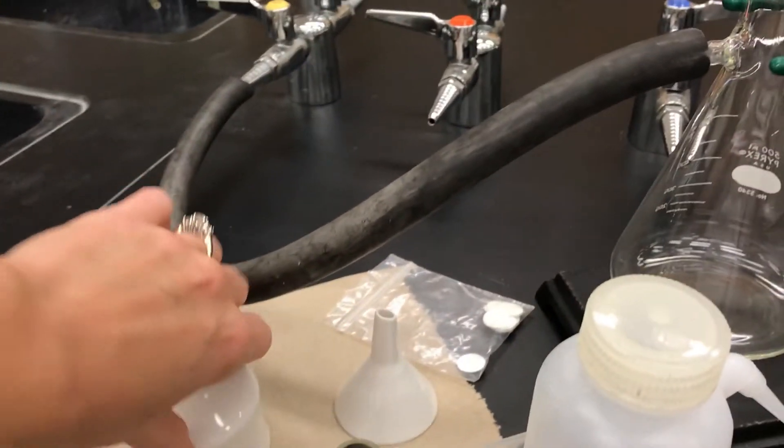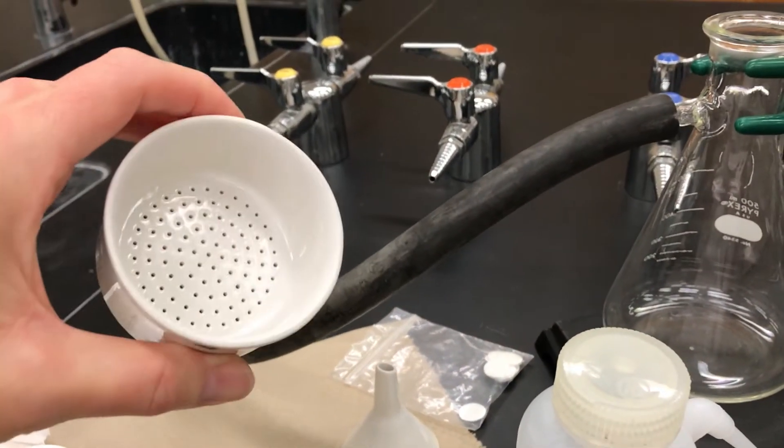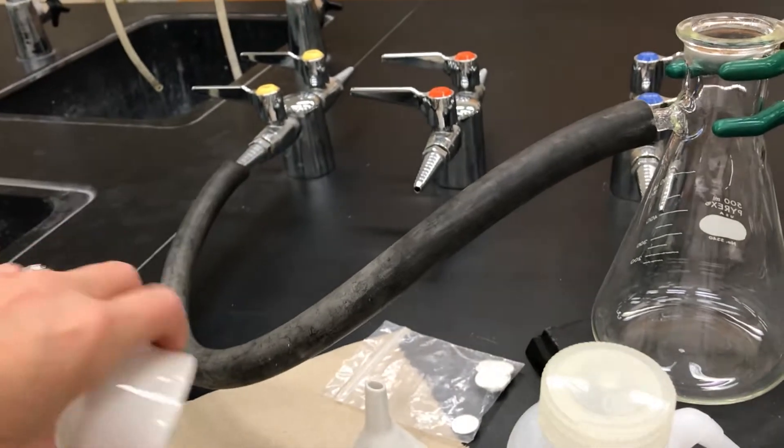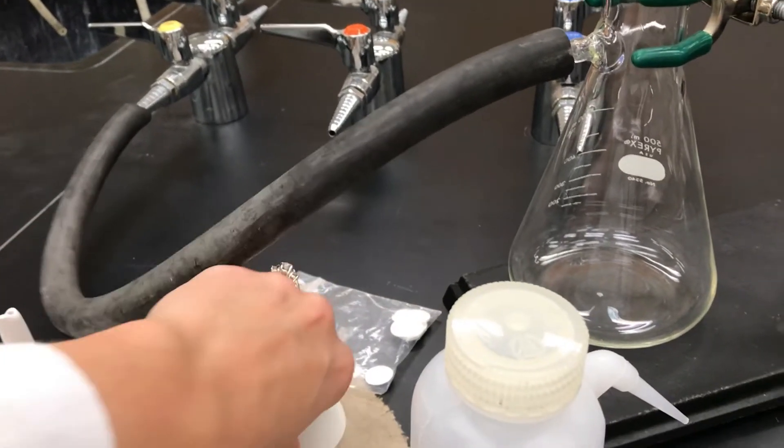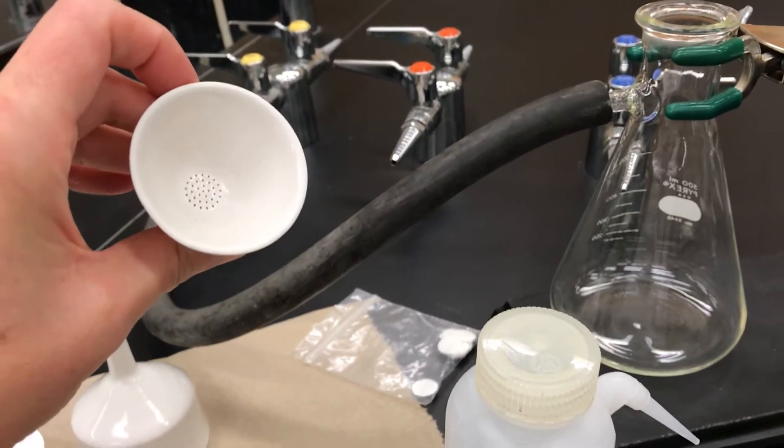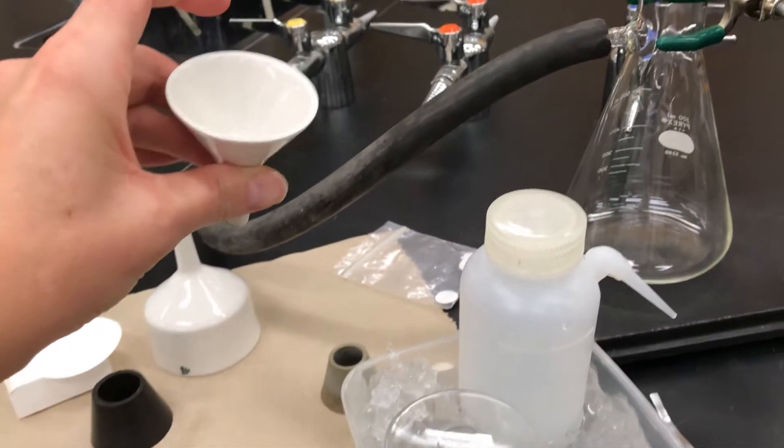We're going to need to use a funnel along with the filter flask, and they come in different sizes. This one's called a Buchner funnel—it's used for large scales. For the small scale filtration we want to use a Hirsch funnel, which is very small.